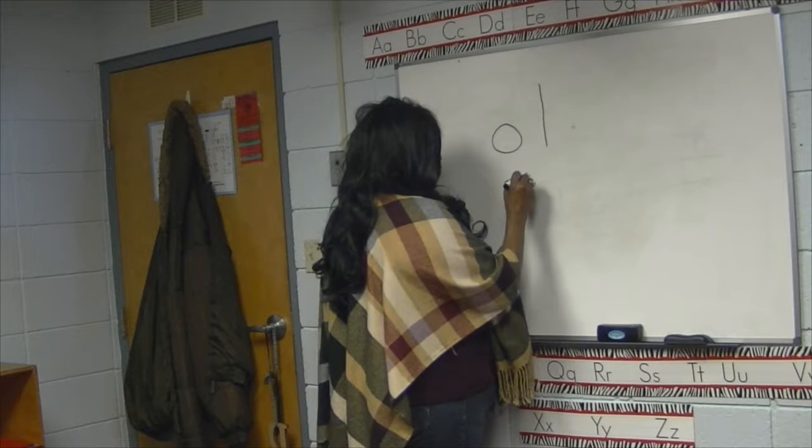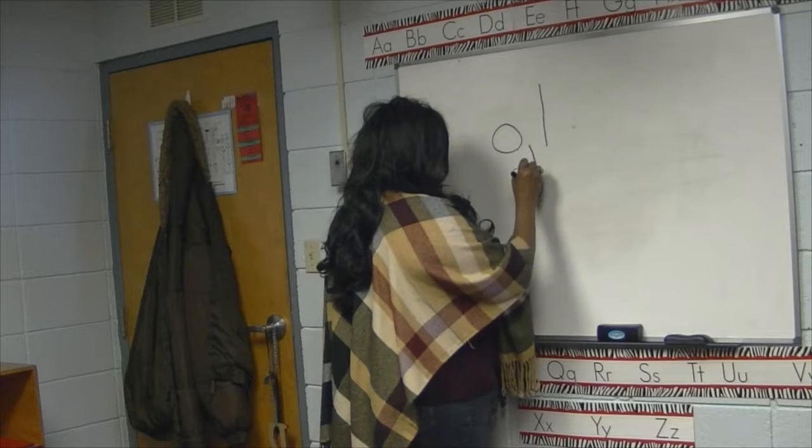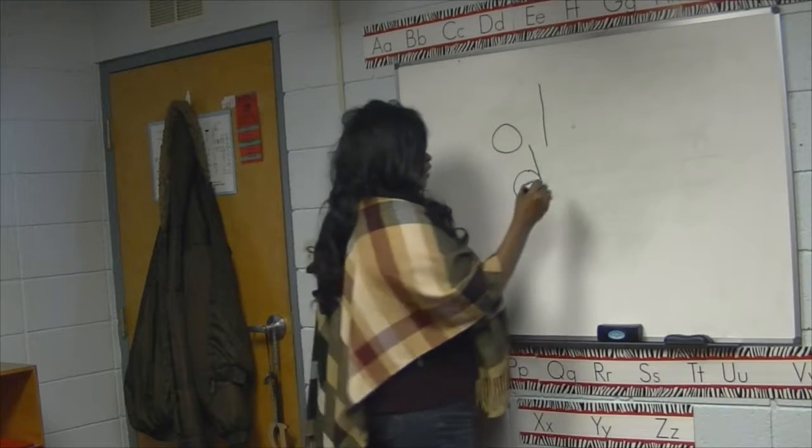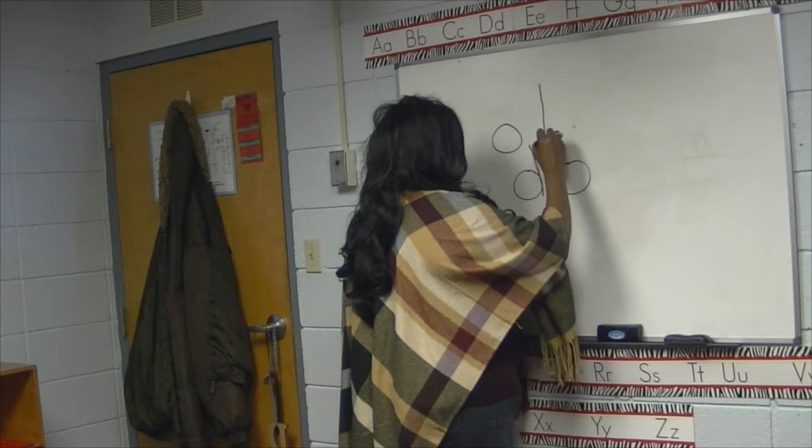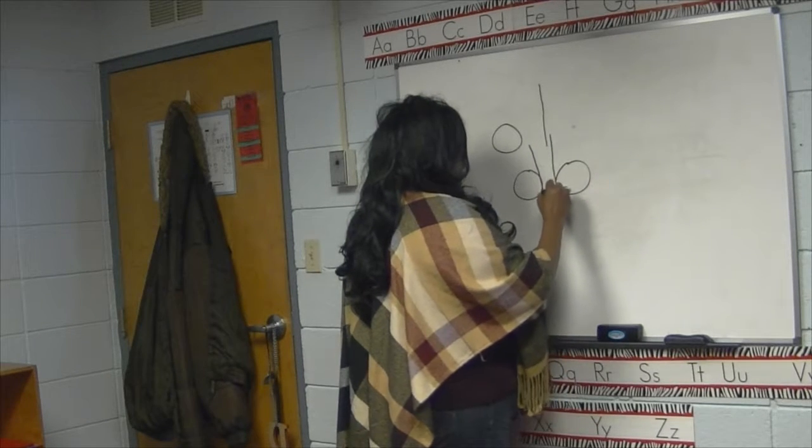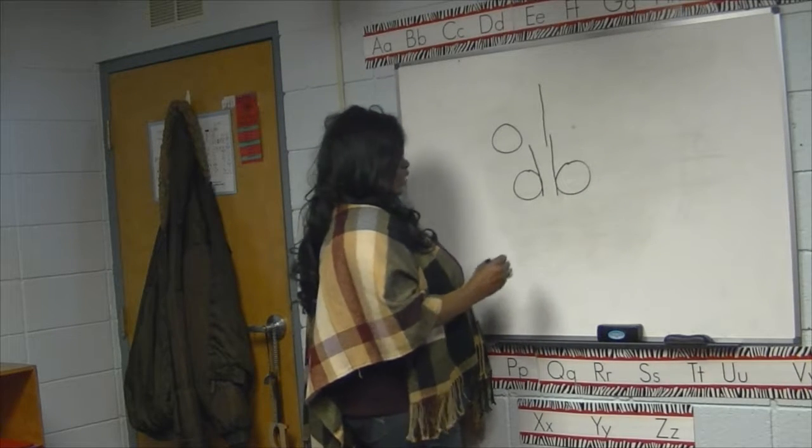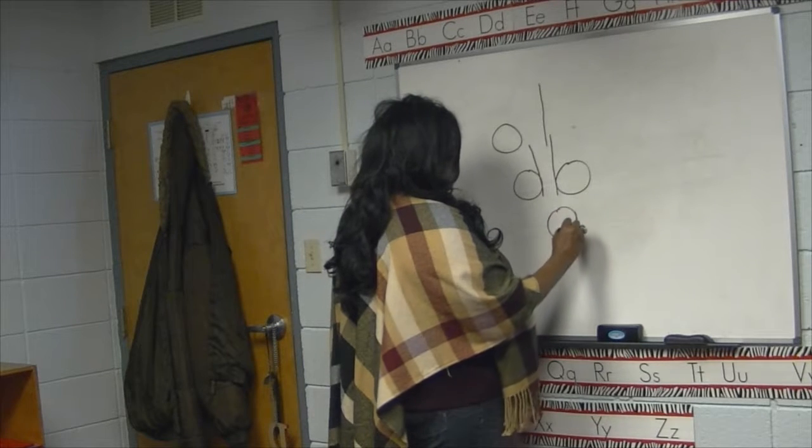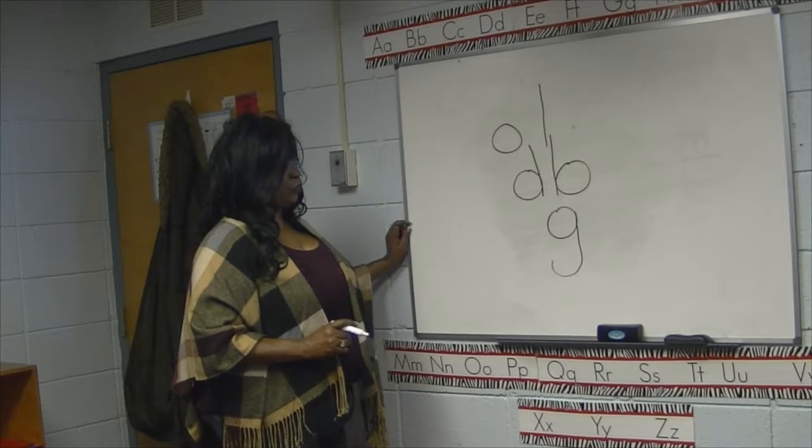I'll tell my kids, we're going to do a circle and a long stick on the right side, and we get the letter D. If I do a circle and a stick on the left side, we get the letter B. If I do a circle and a long stick below the line, we get the letter G. It's just that simple.